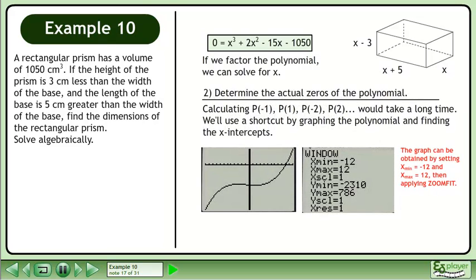The graph can be obtained by setting xmin equal to negative 12 and xmax equal to 12, then applying zoom fit. Use the zero feature of the graphing calculator to get the x-intercept, 10.